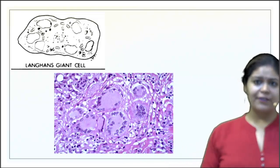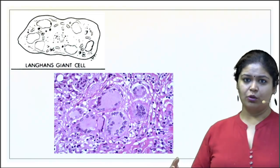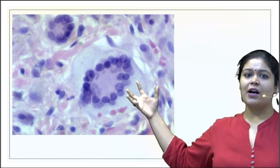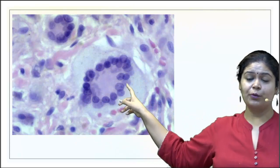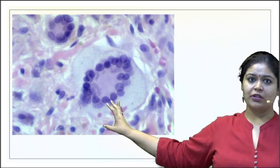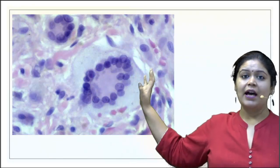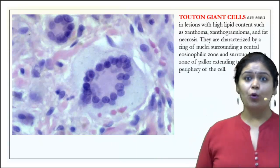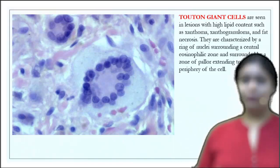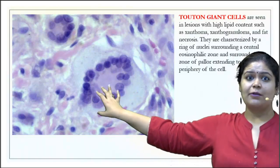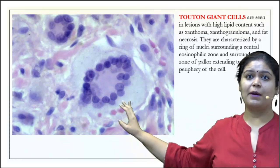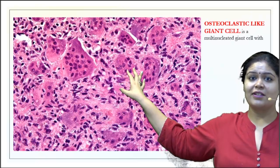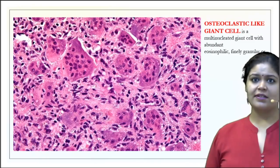Based on this, we classify granulomas into foreign body granulomas and immune granulomas. There are also other types of giant cells. The Touton-type giant cell shows a circular arrangement of nuclei with pink material in between and a pale area around it — pink nuclei, then pale. This classical picture is seen in lipid-rich lesions like xanthomas, xanthogranulomas, and fat necrosis, where you can also get dystrophic calcification. It shows a ring of nuclei surrounding a central eosinophilic zone with a zone of pallor at the periphery.